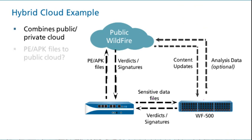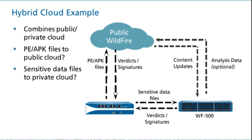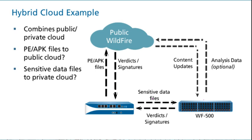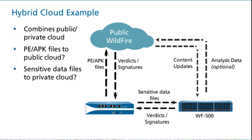A hybrid cloud combines the public and private cloud solutions. If you use a WF500 appliance, you can configure a Wildfire hybrid cloud that enables the WF500 to analyze sensitive file types locally, while other less sensitive file types, such as PE files, are forwarded to the Wildfire public cloud. You can also forward file types that are not supported on the WF500, such as APK files, to the Wildfire public cloud. If the public and private cloud solutions are used together, the private cloud analysis prevails when overlapping configurations exist.